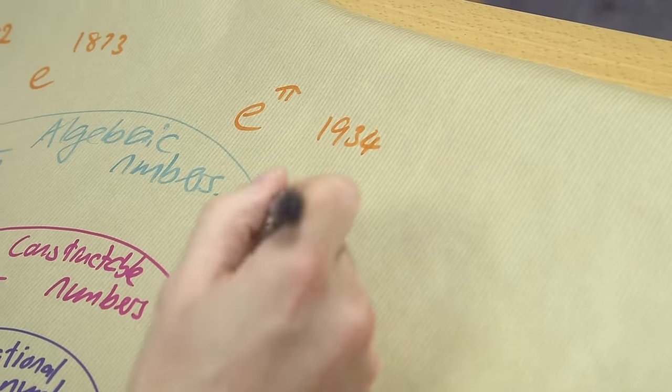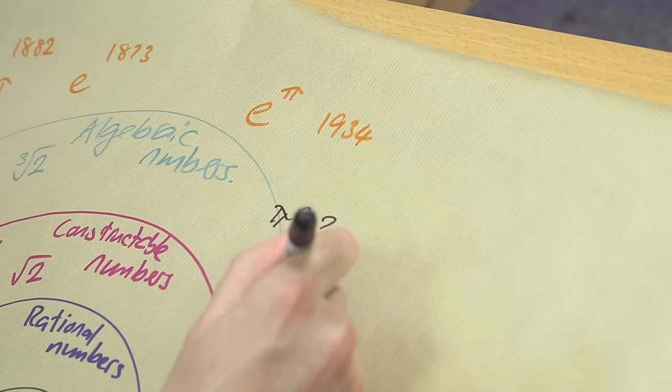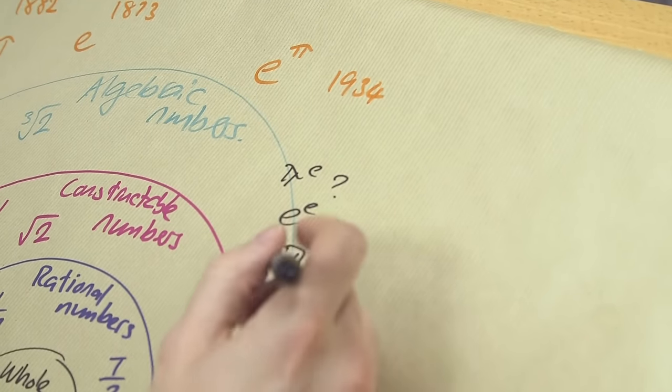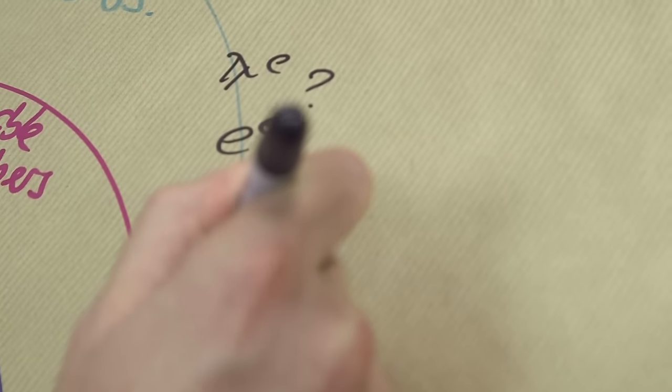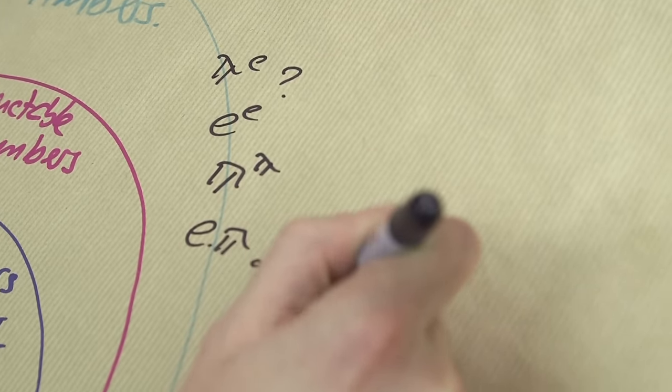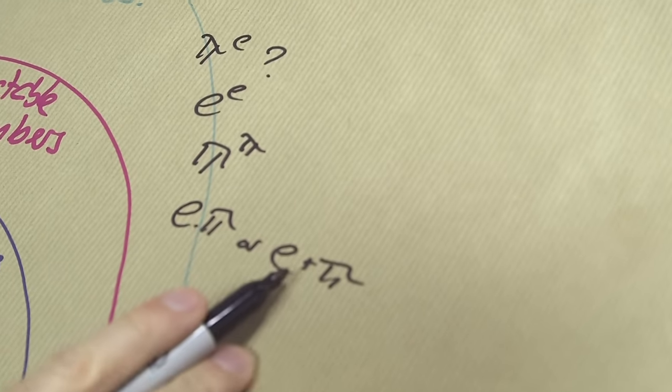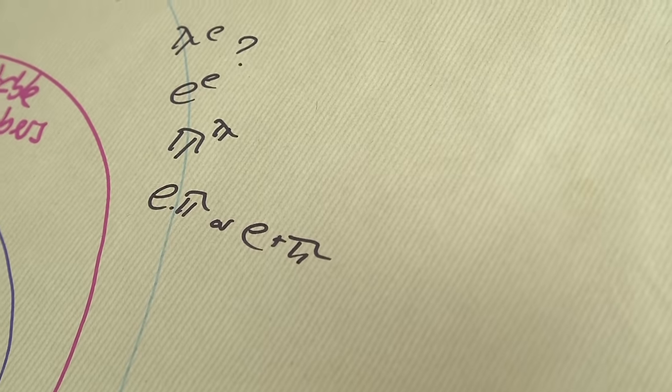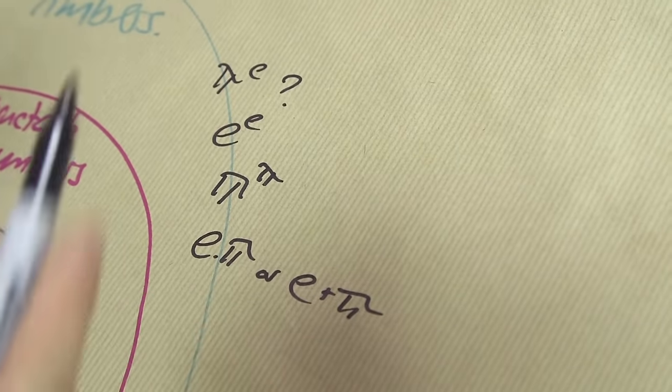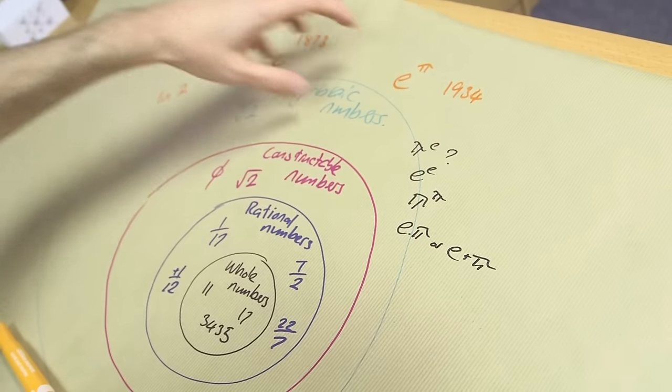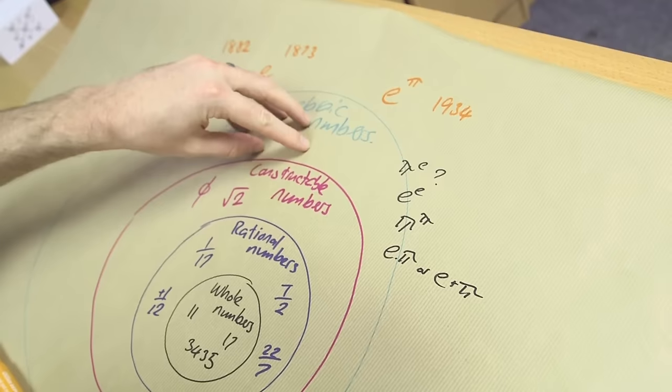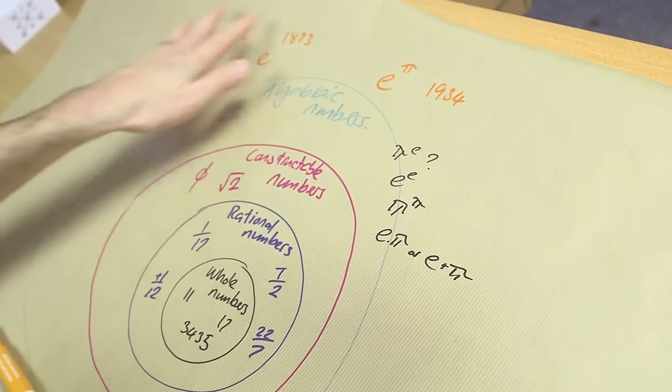Pi to the e, we don't know. e to the e, we don't know. Pi to the pi, we don't know. These are all on the cusp. We know that one of e times pi or e plus pi, one or more of those are transcendental. We don't know which, or both. But we know at least one of them is. Most numbers that we know are algebraic sit around here, and we don't know if they're definitely transcendental, or if they're still algebraic. For the most part, we haven't got a clue.